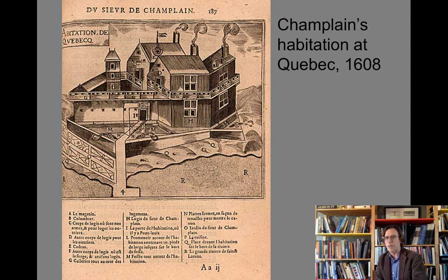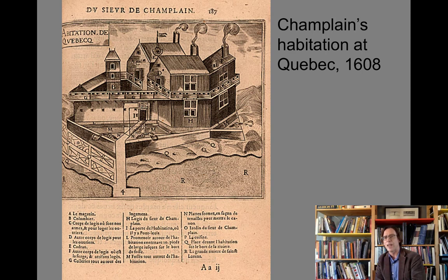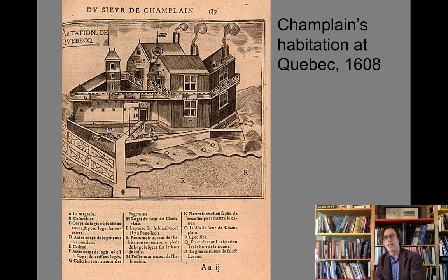Four years later, Champlain, seeing bigger possibilities down the St. Lawrence River, leads a small expedition to modern-day Quebec and begins to build a habitation there, much like they had built at Port Royal. A drawing from his 1612 illustrated book shows a fairly substantial building and complex — but again, we're talking about a couple dozen men manning it.